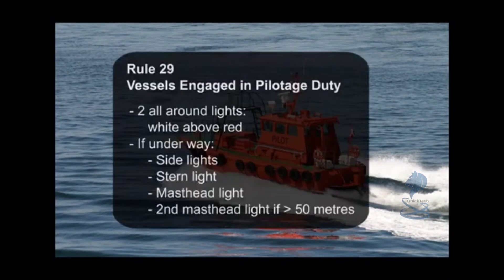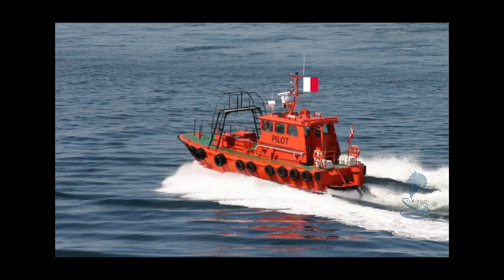Rule 29, Vessels Engaged in Pilotage Duty: two all-around lights, white above red. If underway: side lights, stern light, masthead light, and a second masthead light if length overall is greater than 50 meters. Flag Hotel — the code flag for the letter H.